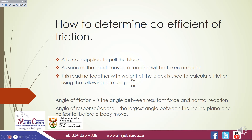How do we determine the coefficient of friction? When a force is applied to pull the block, as soon as the block starts to move, a reading is taken on scale. This reading, together with the weight of the block, is used to calculate friction using the formula: mu equals the frictional force over the normal force, or over the weight.